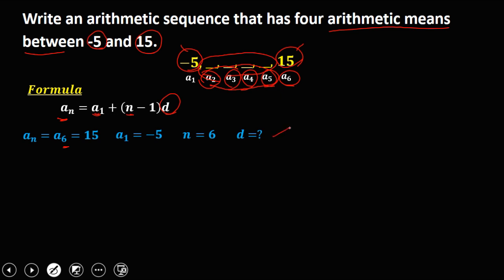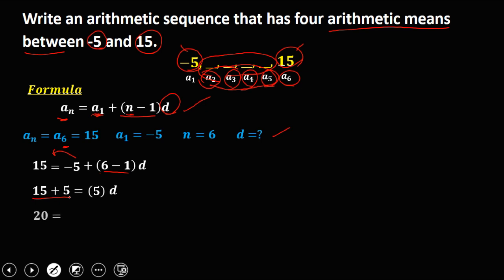Substituting these values into the formula: a sub n is 15, a sub 1 is negative 5, and n minus 1 is 6 minus 1. Simplify by transposing negative 5 to the left side: 15 plus 5 equals 5 times d. That gives us 20 equals 5d. Dividing both sides by 5, d equals 4. So 4 is the common difference.